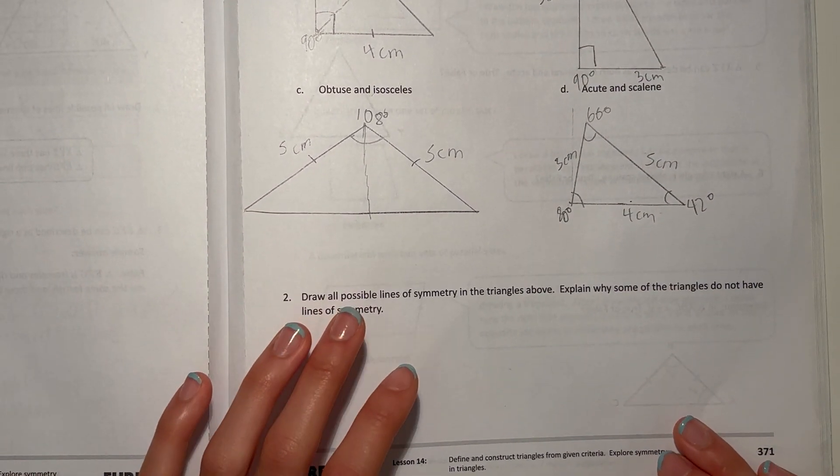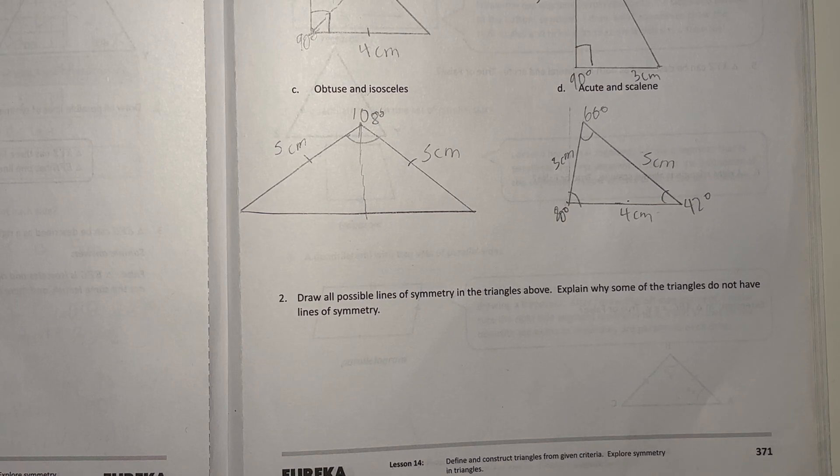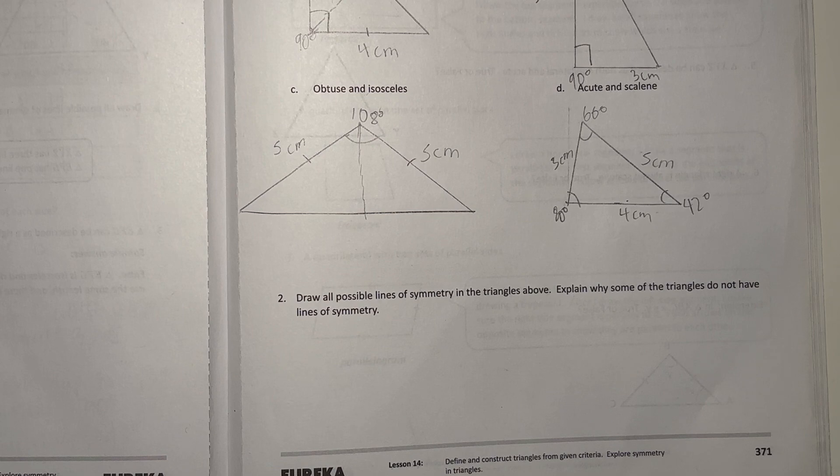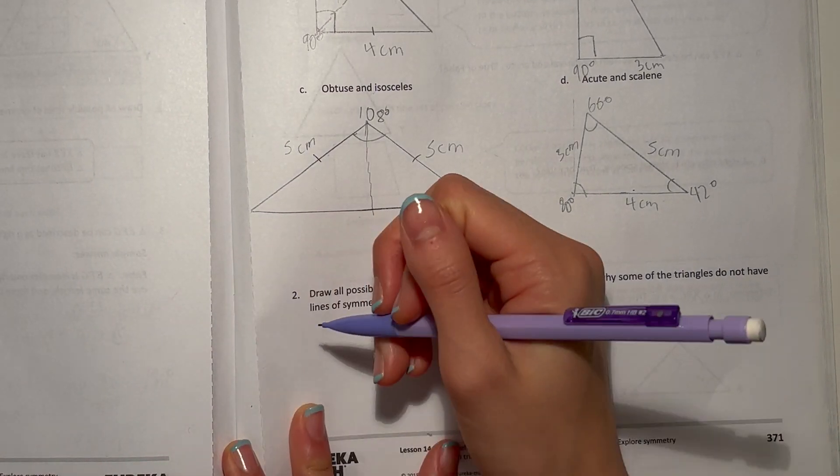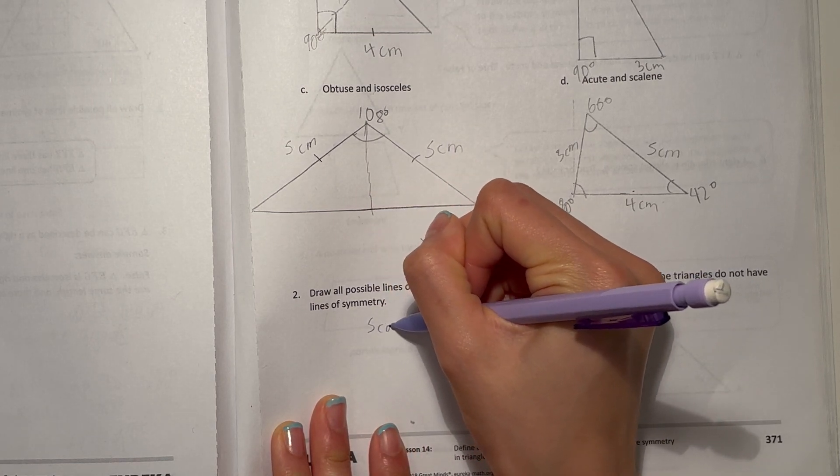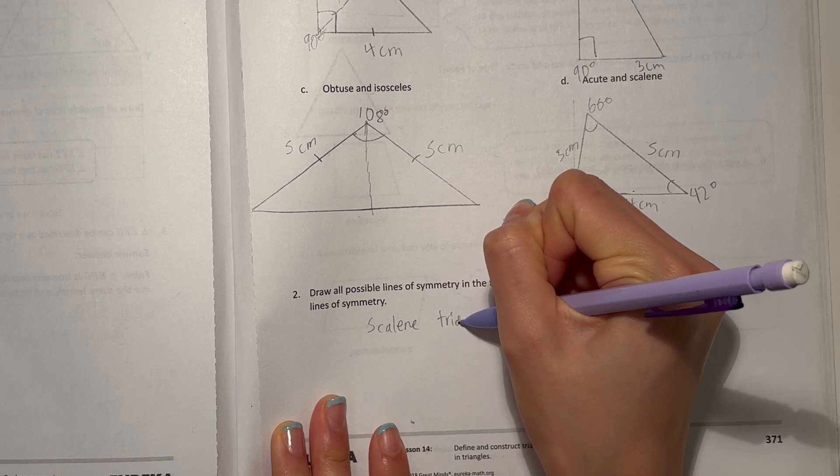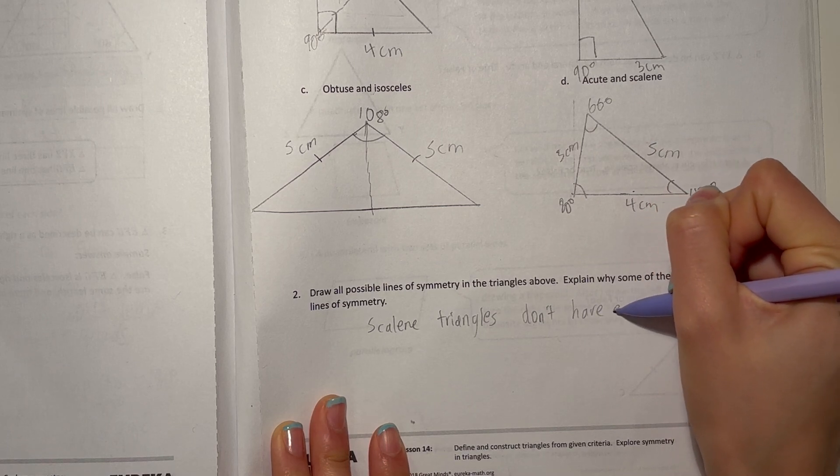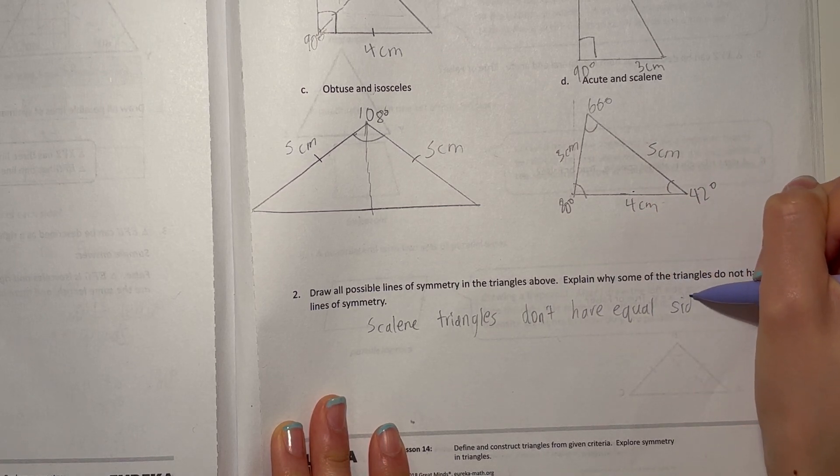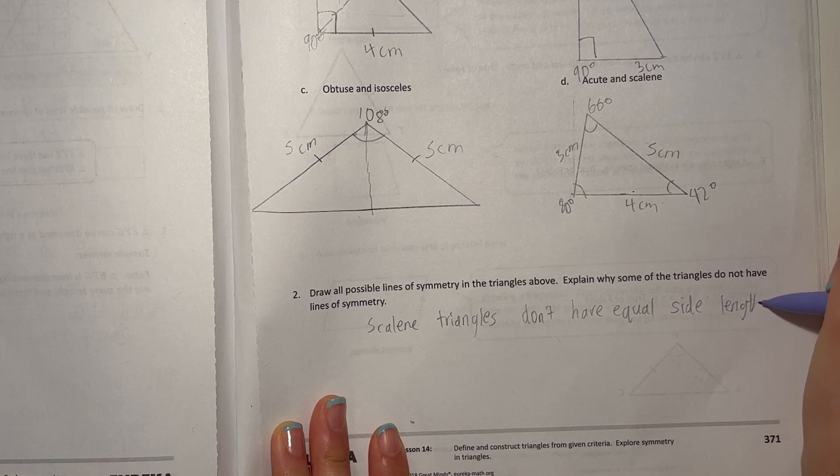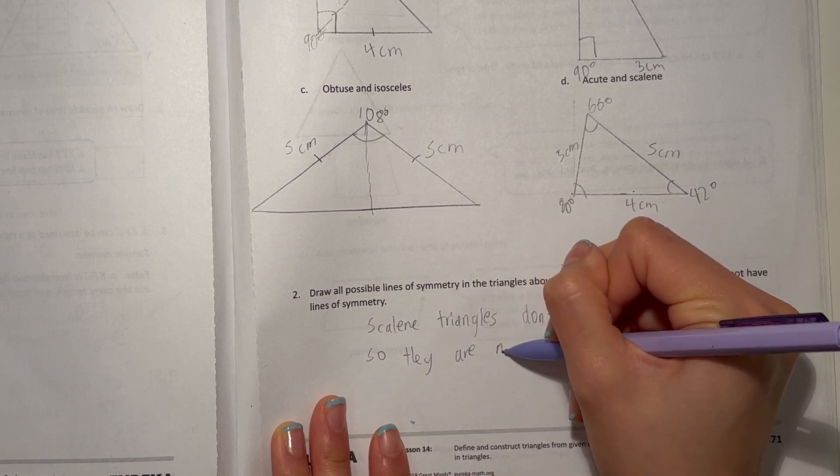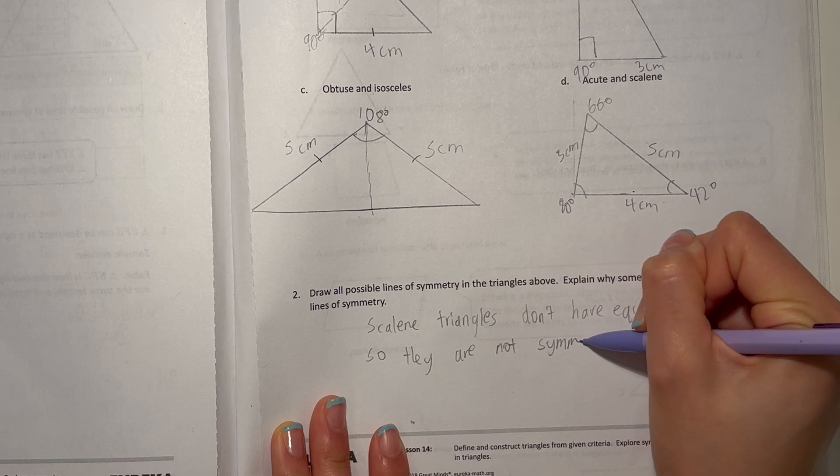So why do some triangles not have lines of symmetry? Well, lines of symmetry means that it's the same on both sides. But scalene, none of the lines are even the same length at all. Then how could they be the same on both sides if they're split into two or more? So scalene triangles don't have equal side length, so they are not symmetrical.